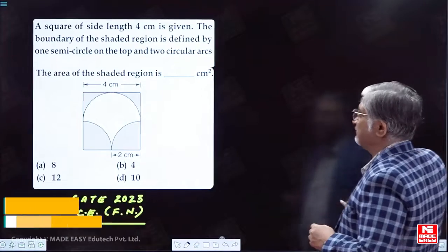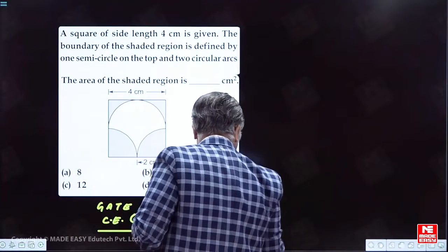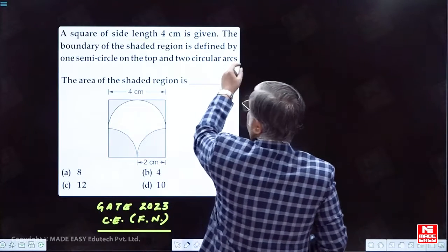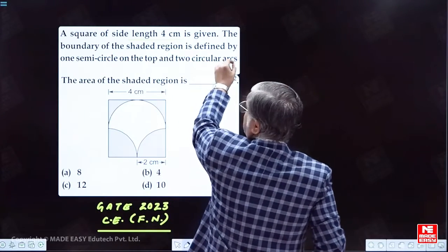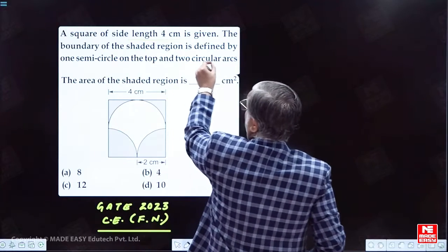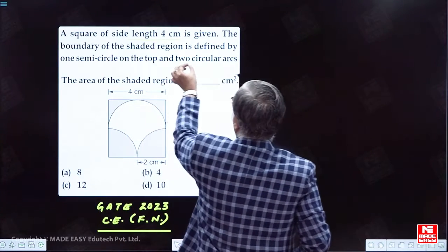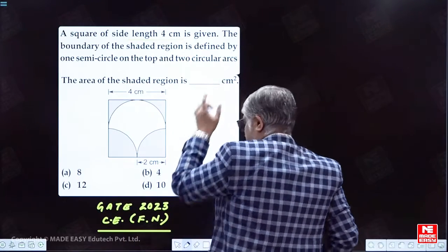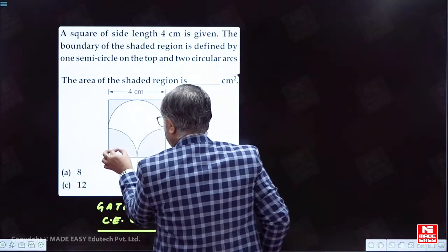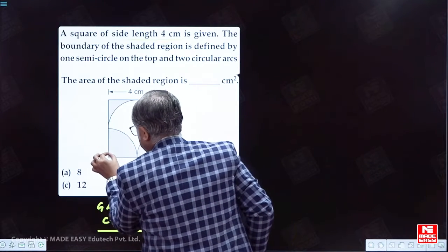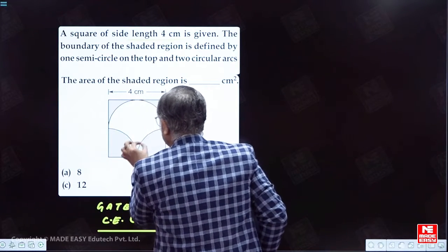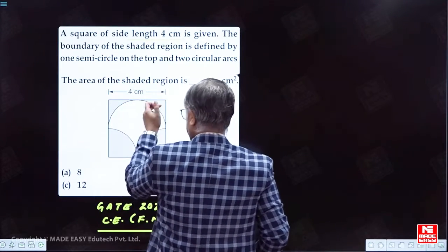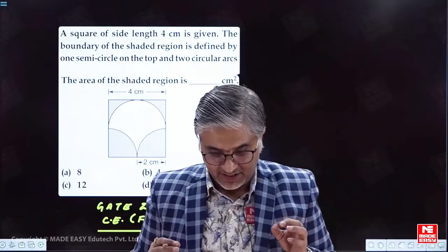Here is a question in front of us. A square of side length 4 cm is given. Boundary of the shaded region is defined by one semicircle on the top and two circular arcs. The area of the shaded region is dash in centimeter square. These two are shaded region which are in fact quadrants. Arc means quadrants because this angle is 90 degree. This is one fourth of a circle. We have to add these four portions and find out the shaded area.